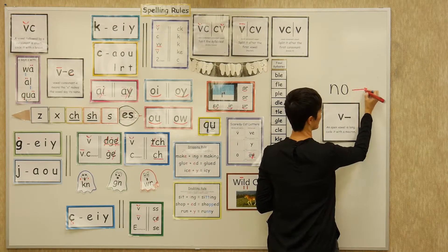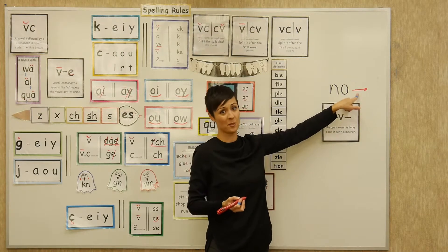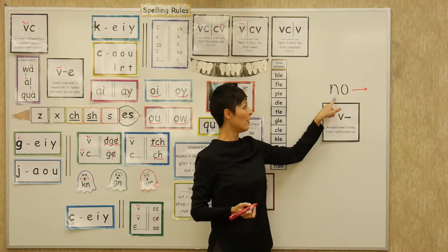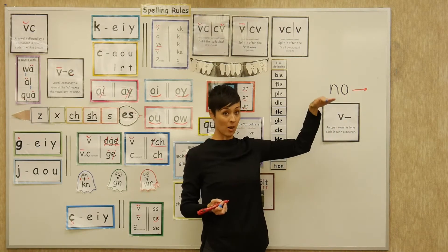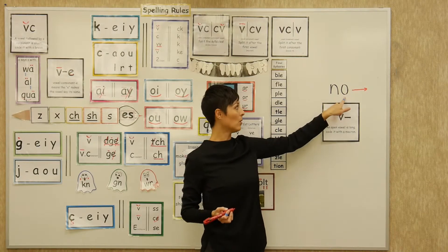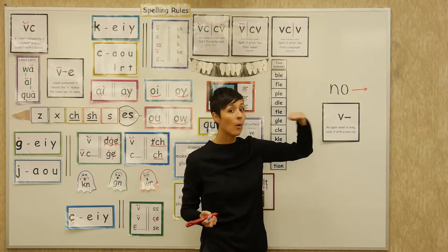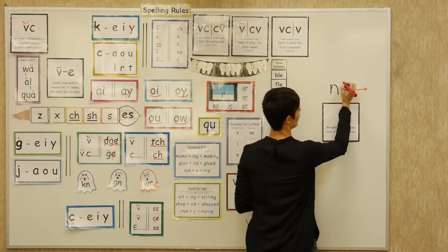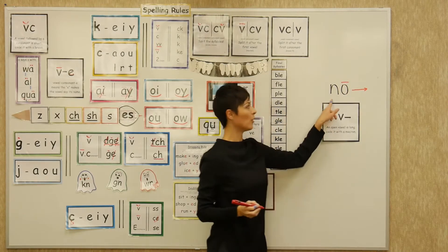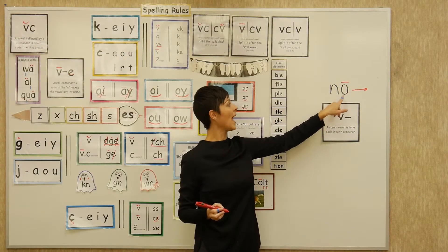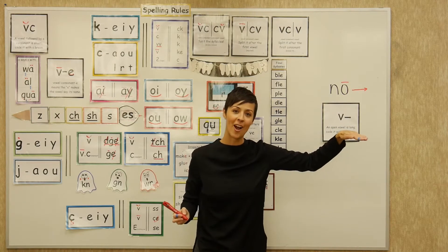I'm going to draw an arrow after it to show there's nothing after it — it's just an open vowel. If we have an open vowel, we code it with a macron to show that there's nothing after it and the O will say its name. And now the rule looks like this: an open vowel is long, code it with a macron.